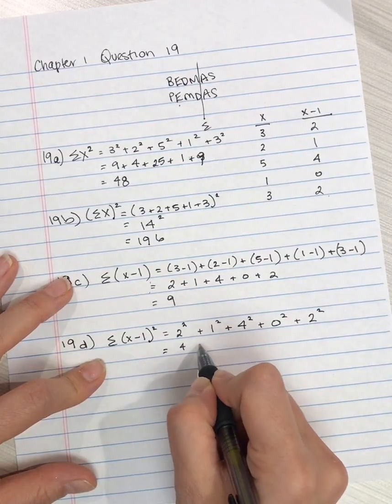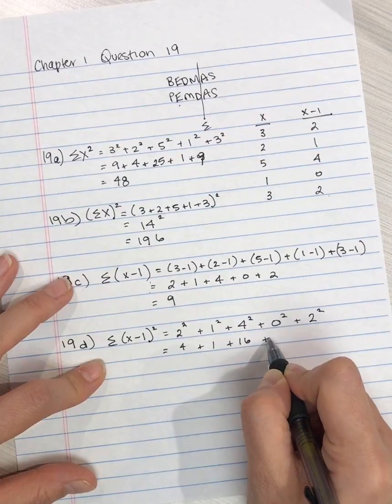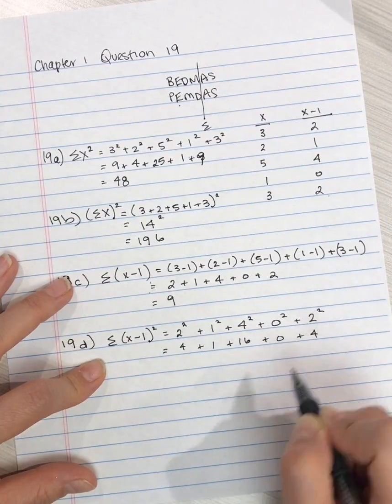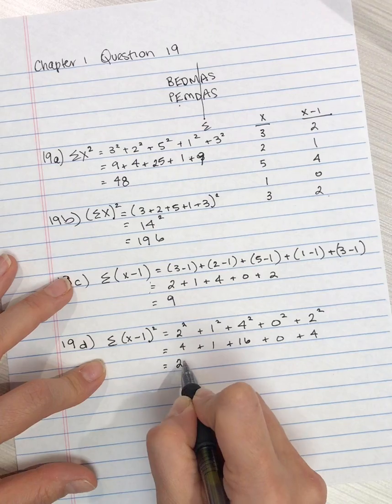So that's 4 plus 1 plus 16 plus 0 plus 4, which is equal to 25.